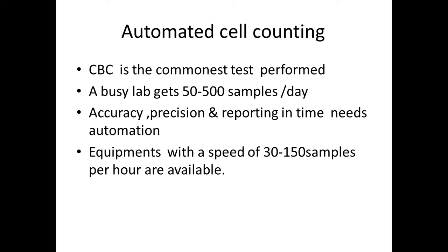The topic of today is automated cell counting. You know how to measure various parameters required in complete blood count. The various parameters in complete blood count are hemoglobin estimation, total leukocyte count, RBC count, platelet count, and various RBC parameters like mean corpuscular volume, mean corpuscular hemoglobin, and RDW. These are the parameters routinely required for complete blood count.